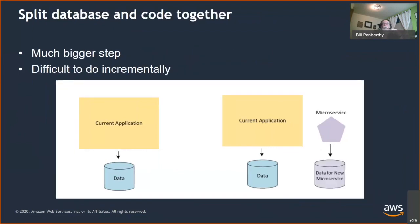The last approach is splitting the database and the code together. In this case, you go from having one data source and no microservices to a functional microservice that controls its own data. This is generally a much bigger step that takes more work and requires a rich understanding of your business domain. In many ways it may be the most ideal pattern, but it's also the most difficult.